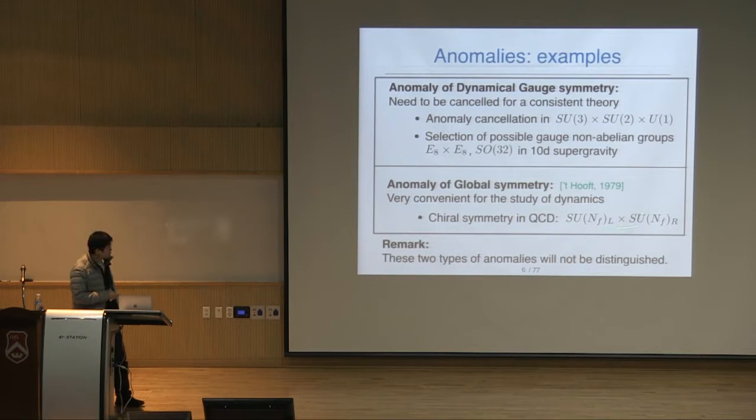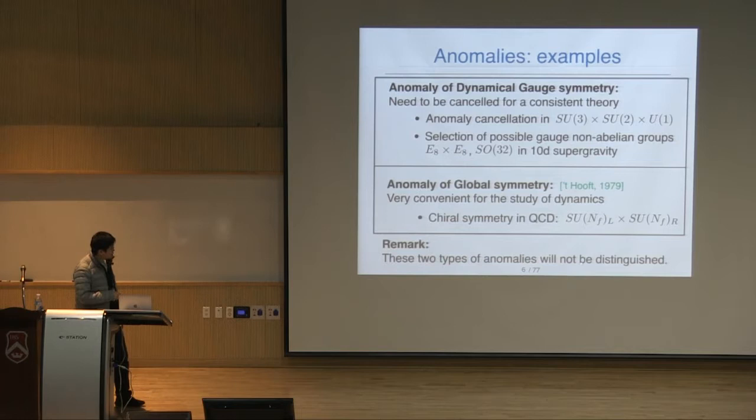In my talk, I don't distinguish these two types of anomalies. The only difference is that the anomaly of dynamical gauge symmetry must be cancelled for consistency, but the anomaly of global symmetry need not be cancelled.